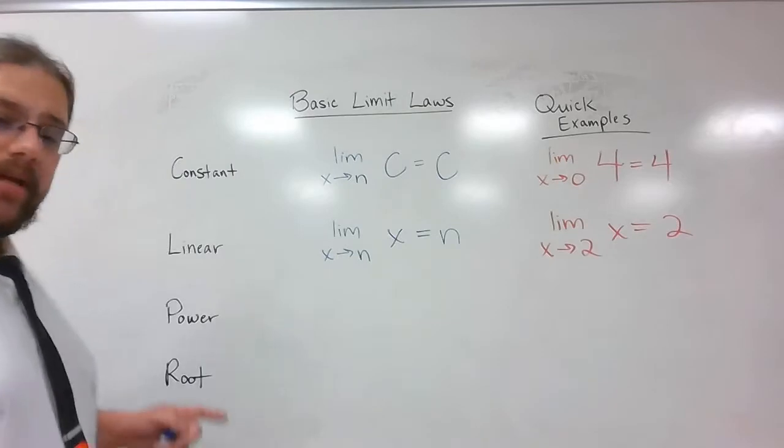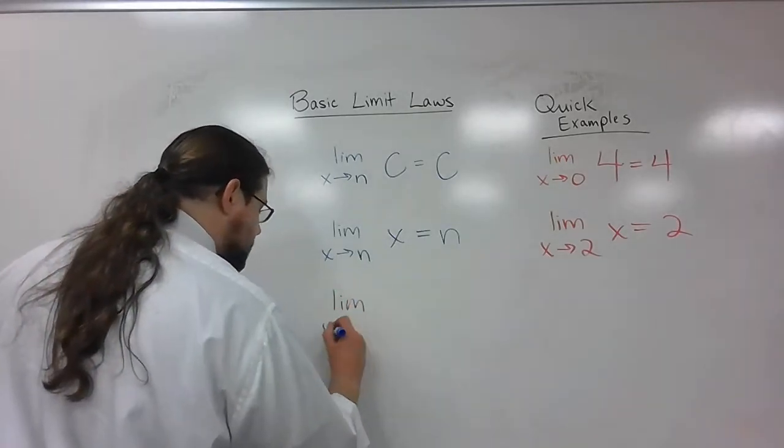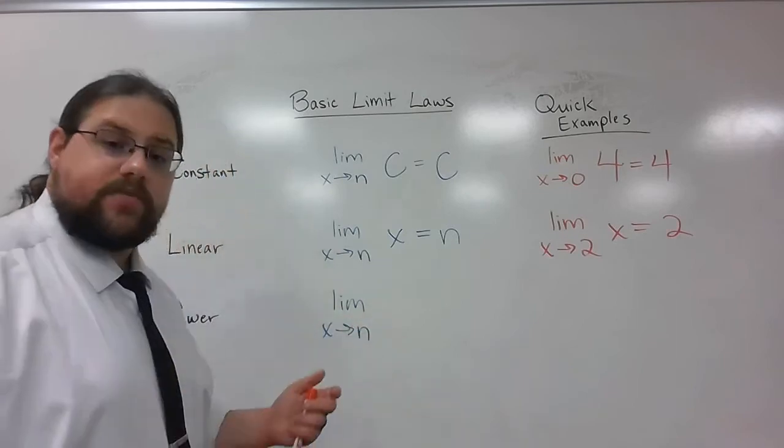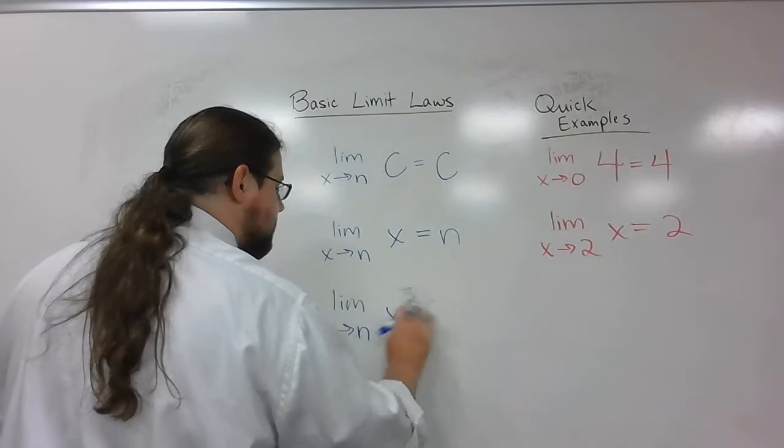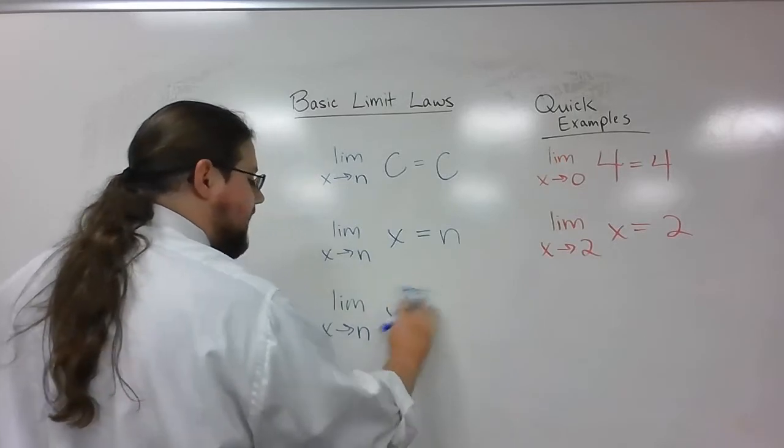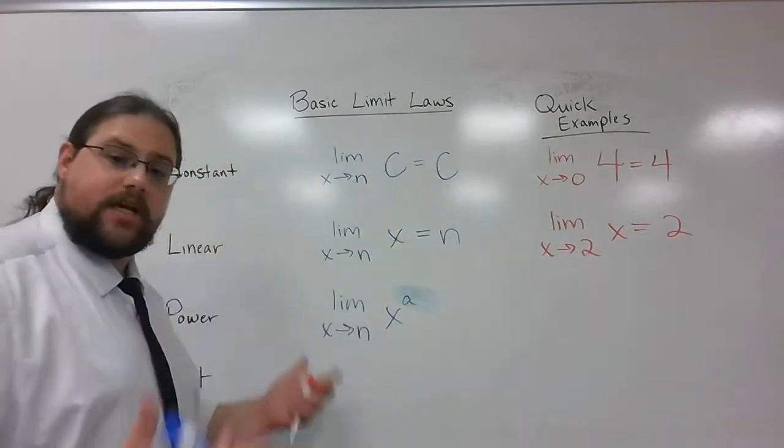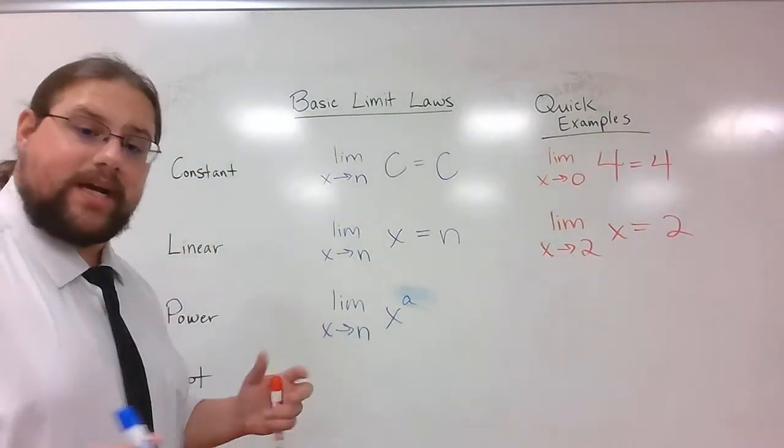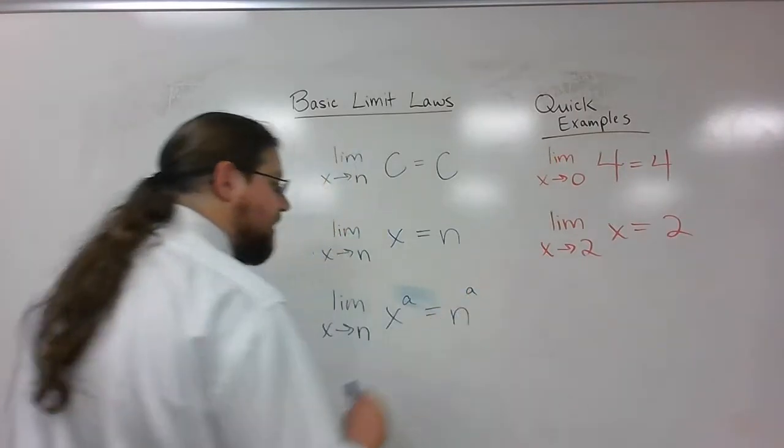Now, let me try another one. This time, I'm going to do a power. I'm going to have the limit as x approaches n of something to a power, like x to the third, or x to the fourth, or maybe just x squared. It's x to some power. In this case, it's just going to be that number to that power.